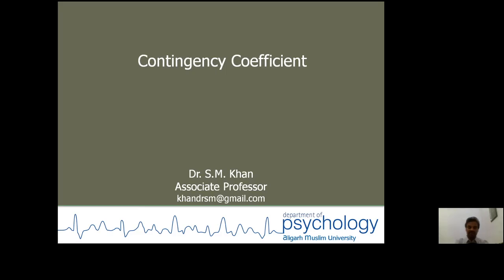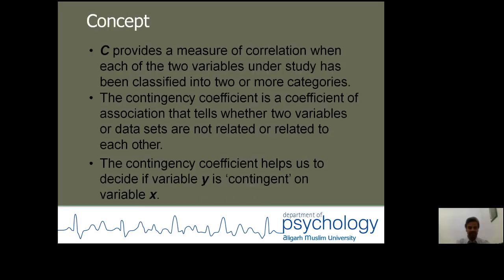I am discussing the contingency coefficient. This is one of the statistical techniques from non-parametric statistical methods. The contingency coefficient provides a measure of correlation when each of the two variables under study has been classified into two or more categories. It is a coefficient of association that tells whether two variables or data sets are related or not related to each other.